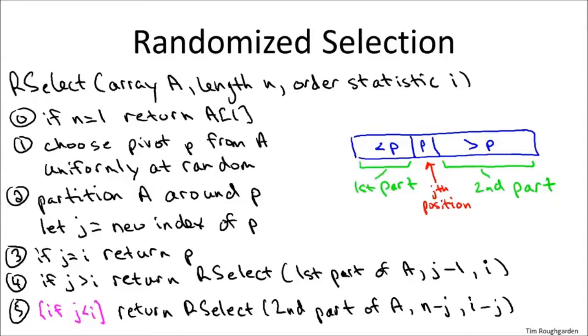So if it's bigger than what we're looking for, that means j is bigger than i, we recurse on the first part of the partitioned array. In the other case, if we guess a pivot element that is less than what we're looking for, well then we should discard everything less than the pivot and the pivot itself. So we should recurse on the second part of A, stuff bigger than the pivot, looking for the i minus jth smallest element in that second part. So that was the randomized selection algorithm. And you'll recall the intuition for why this works is random pivots should usually give pretty good splits.